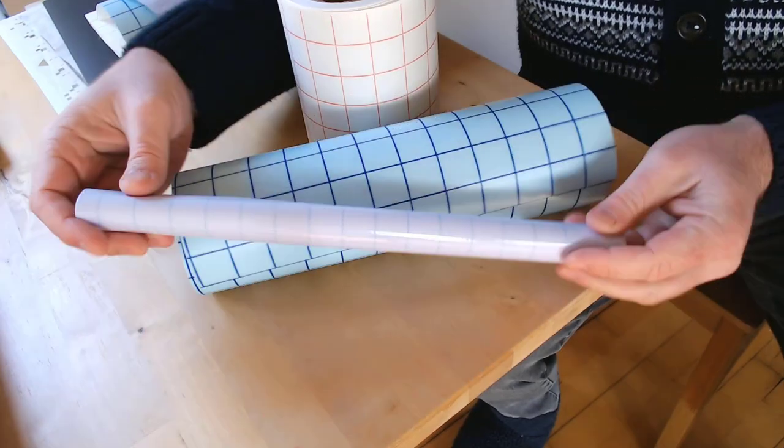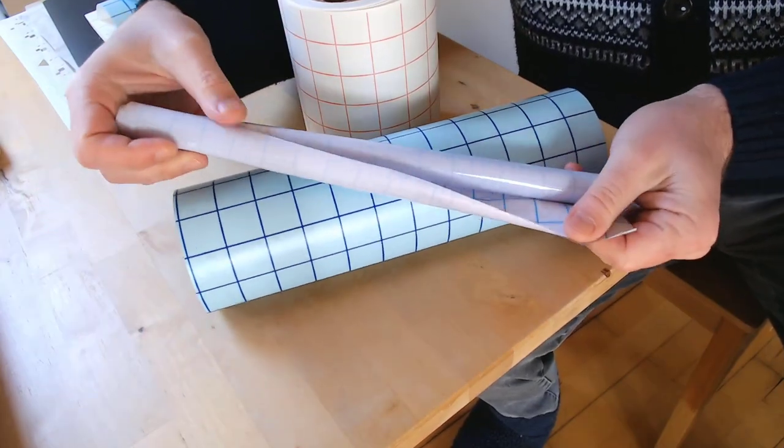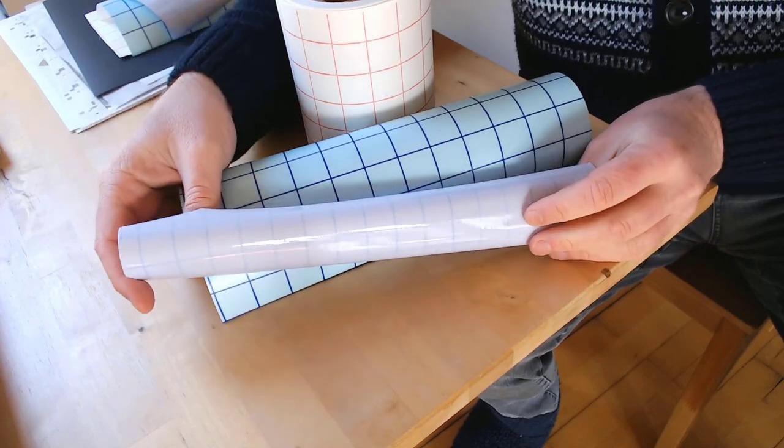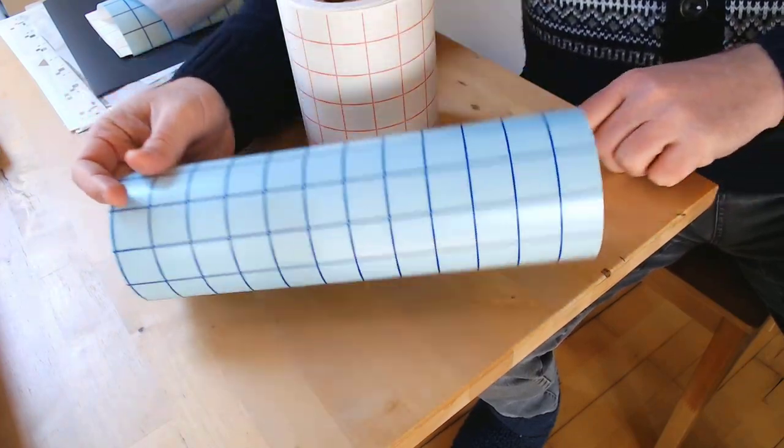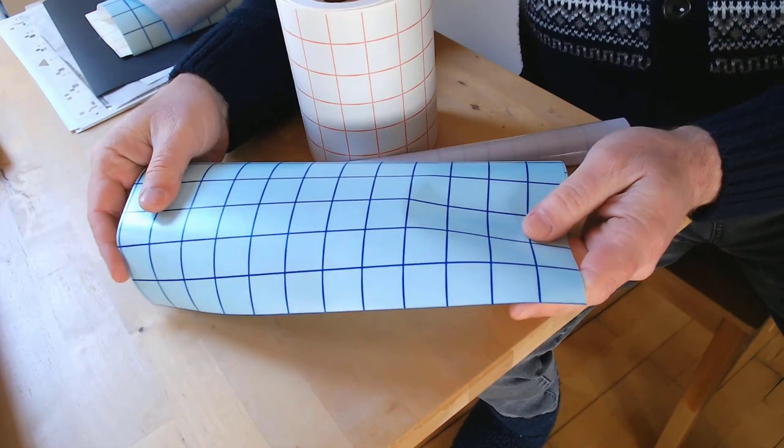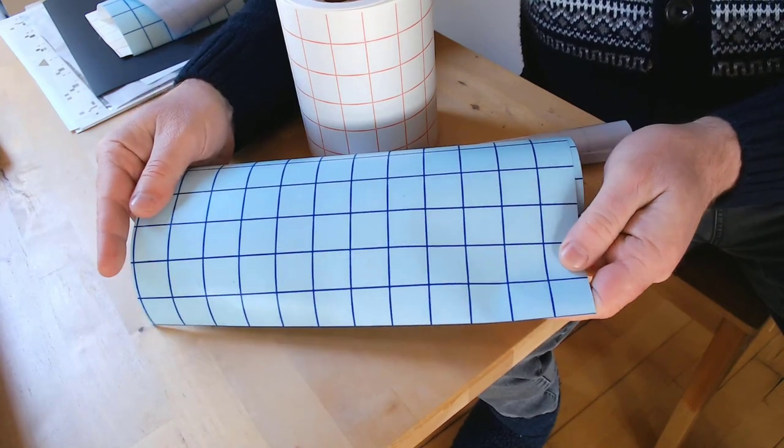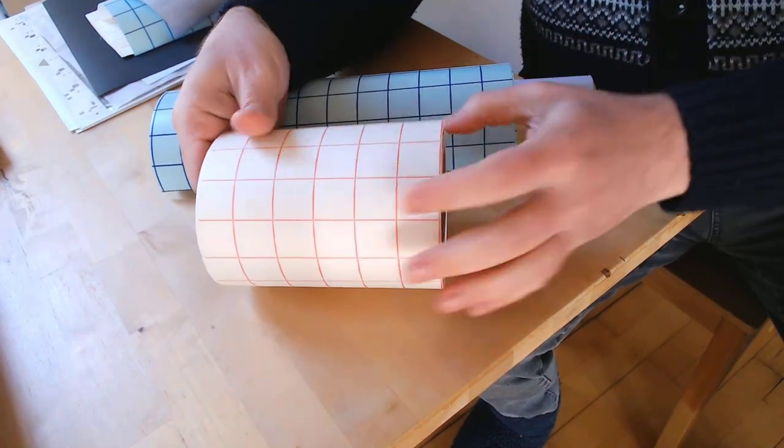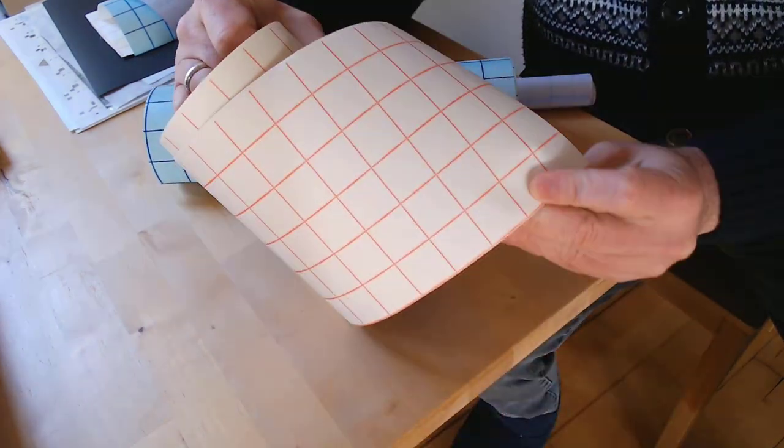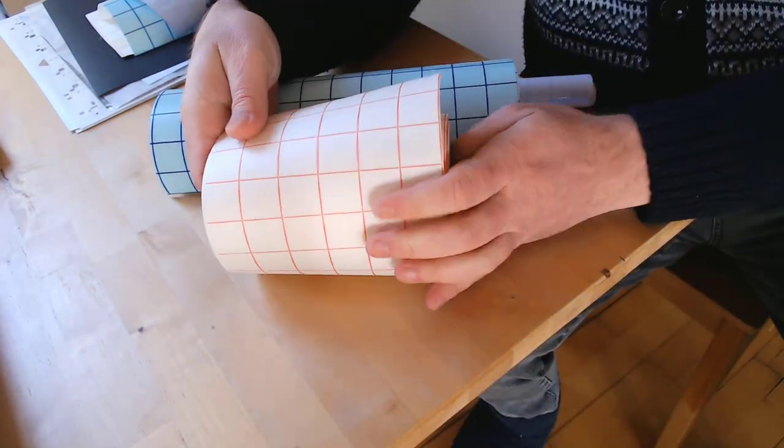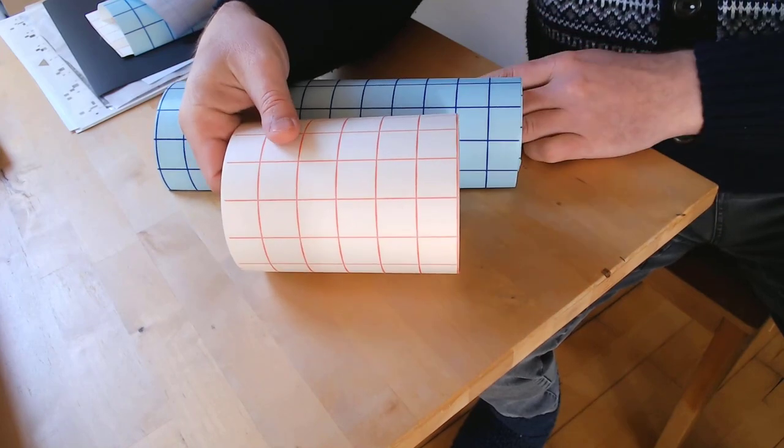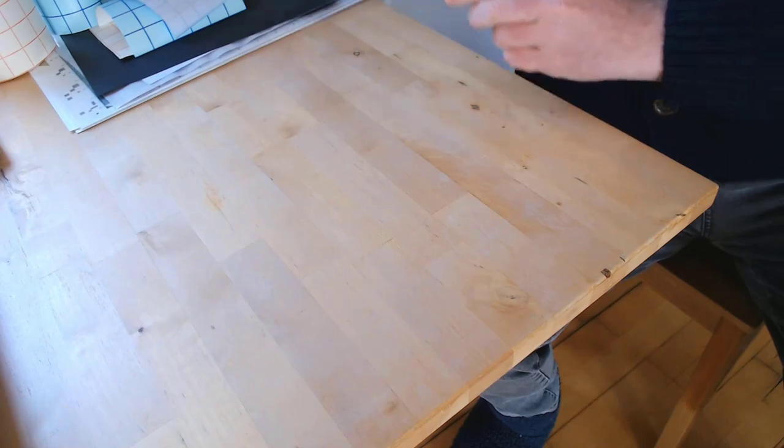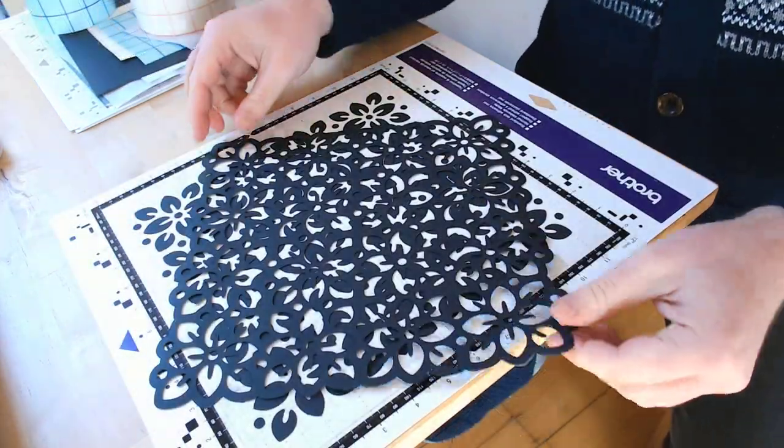First up, a quick run through of the transfer tapes that I'm using. This first one is actually a contact paper and it's usually used for covering exercise books. The second one is actually the Brother transfer tape usually used for transferring vinyl projects from the carrier sheet onto your project, and the third is an opaque transfer tape, so it's not clear or see-through, but it is again designed for transferring vinyl from carrier sheet to project.